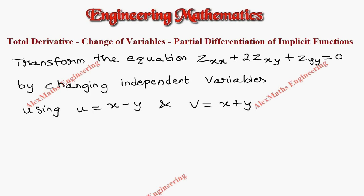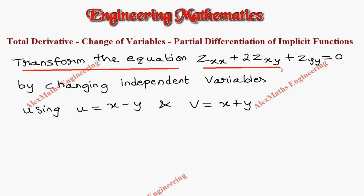Hi students, this is Alex here. In this video, we are going to transform the given equation zxx plus 2zxy plus zyy equal to 0 by changing independent variables using u equal to x minus y and v equal to x plus y.